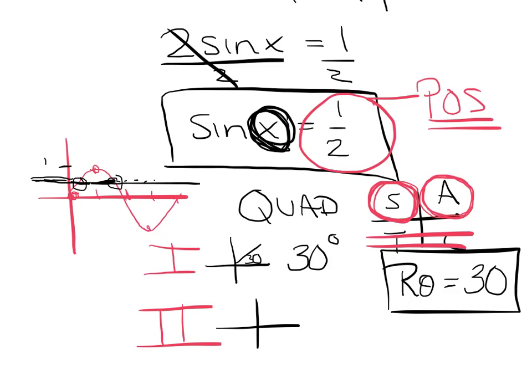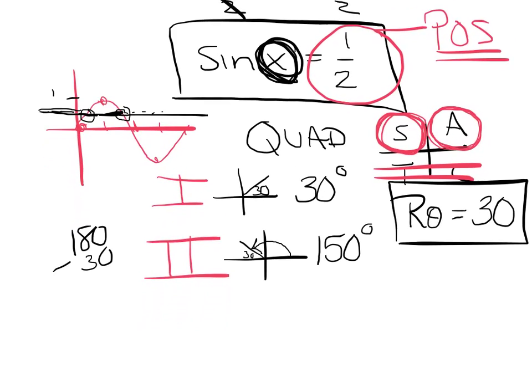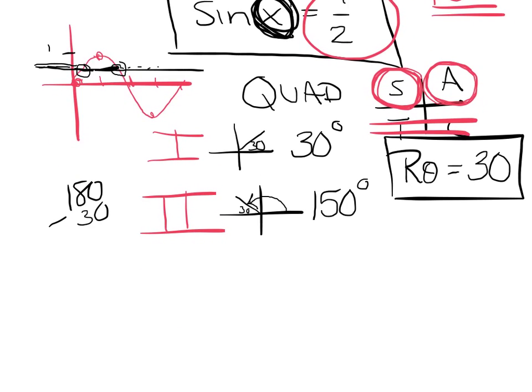Now in quadrant 2, I've got to put my 30 degree angle in. How big is the actual angle, though? How did we figure that out before? Well, remember, that's just 180 minus 30. So I would say 150 degrees. Now, depending on the way the question's worded, we might be done, we might not be. If they want the answer in degrees, I would just put my answer in bracket notation and say I've got 30 degrees and 150 degrees.